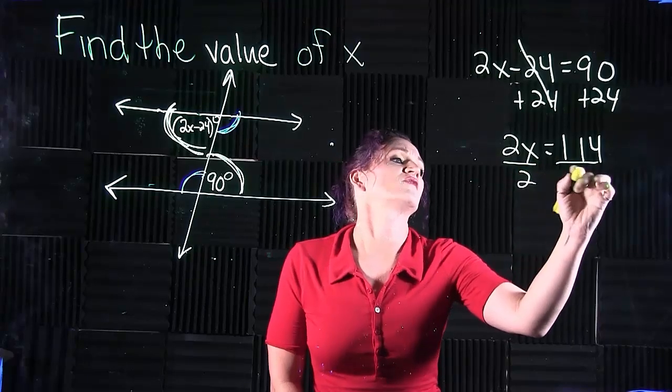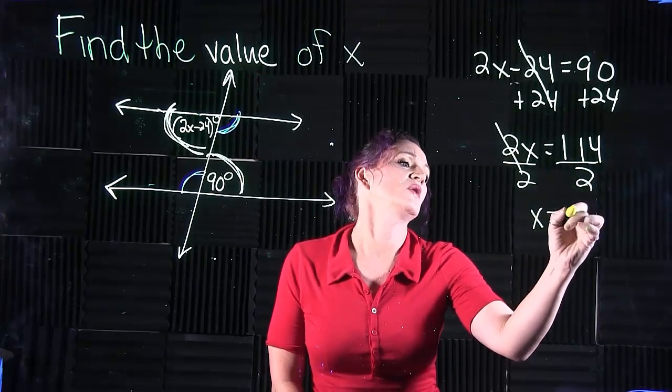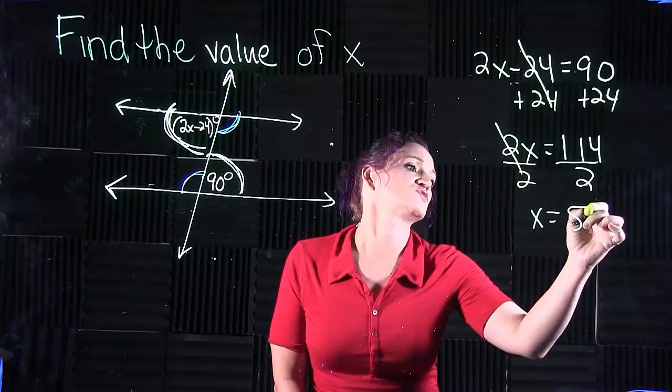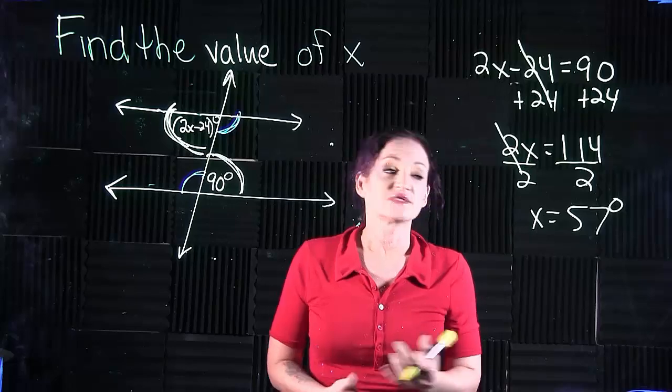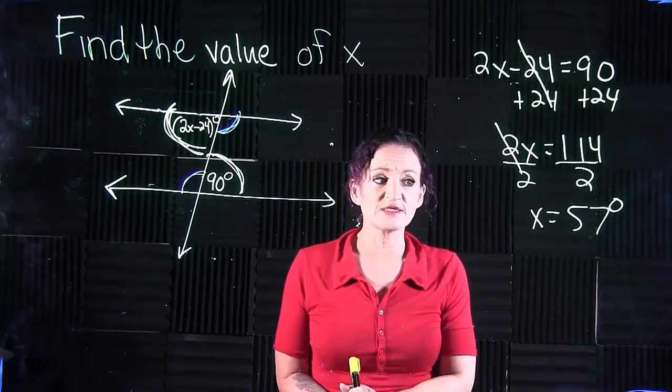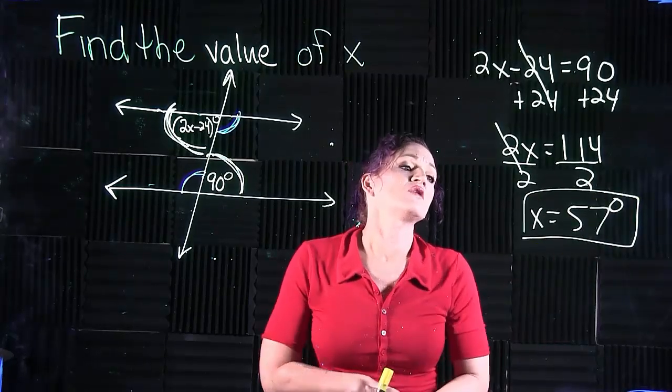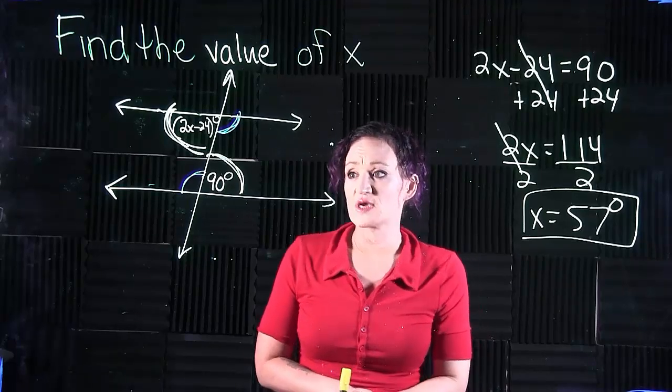Divide out that coefficient, so we're dividing by 2, and x equals 57. So x equals 57 degrees. Finding the value of x, x is equal to 57 degrees.